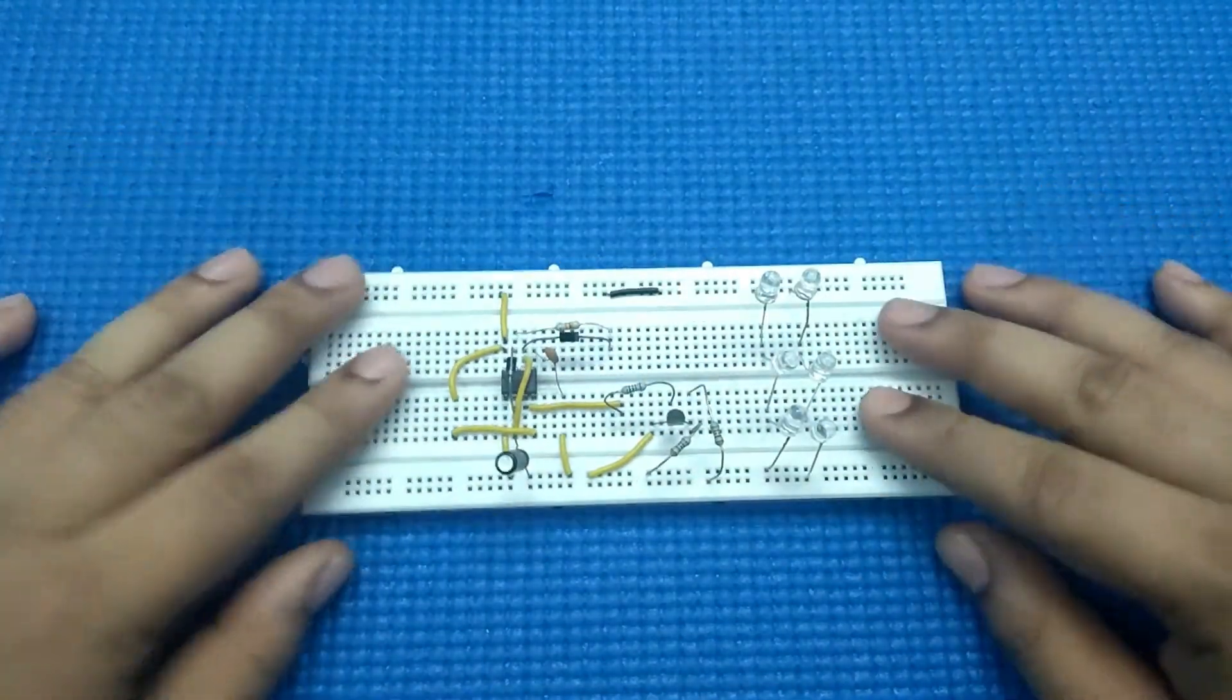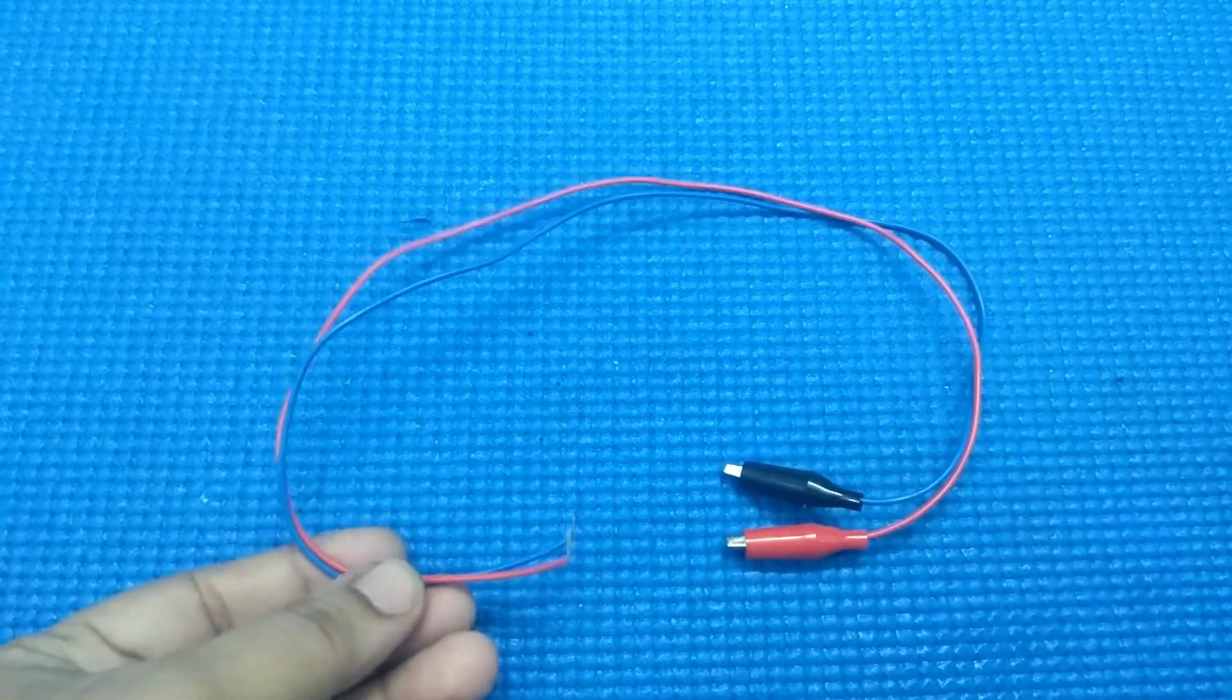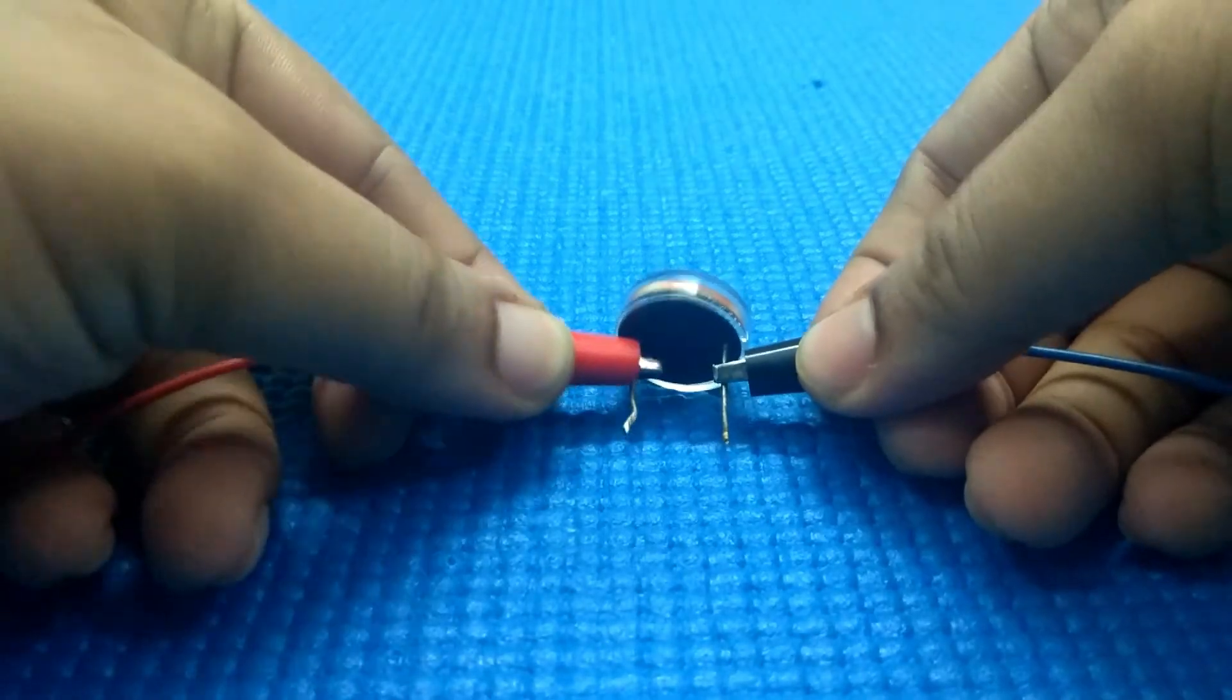Now the circuit is finally built. Now take two long pieces of wire and attach them to the leads of LDR.